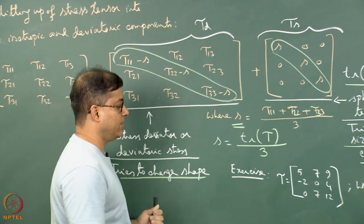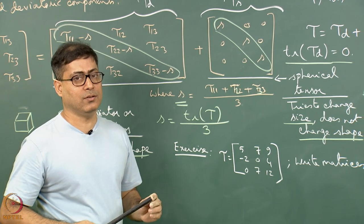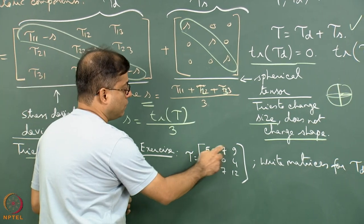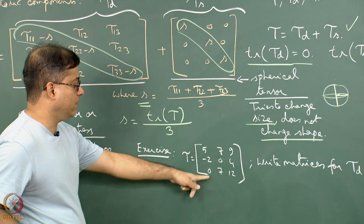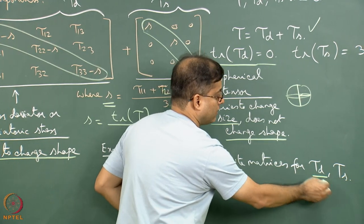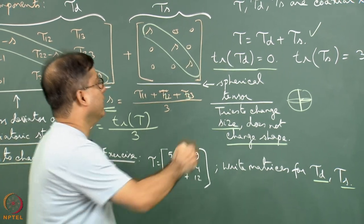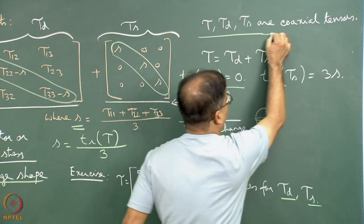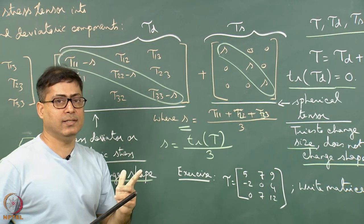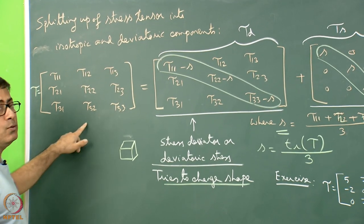The exercise for students — and students must do this — is that just by watching the lecture you cannot learn the subject; you must use paper and pen. Given tau as a matrix with specific numbers (none negative, two zeros), find the matrices representing tau_D and tau_S. Also note that tau, tau_D, and tau_S are all coaxial tensors, because the X, Y, Z axis orientation is not changed from the original tau tensor.